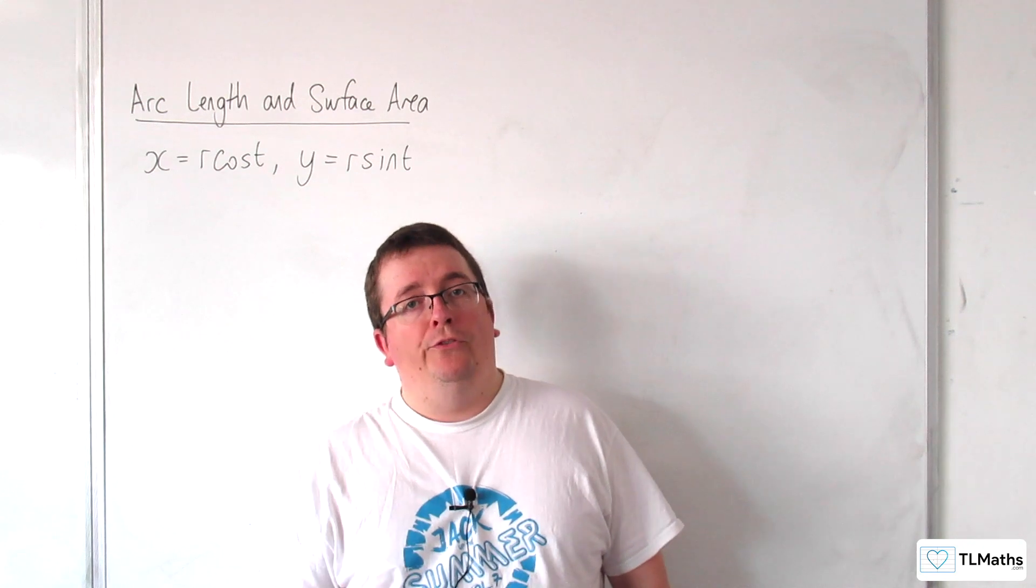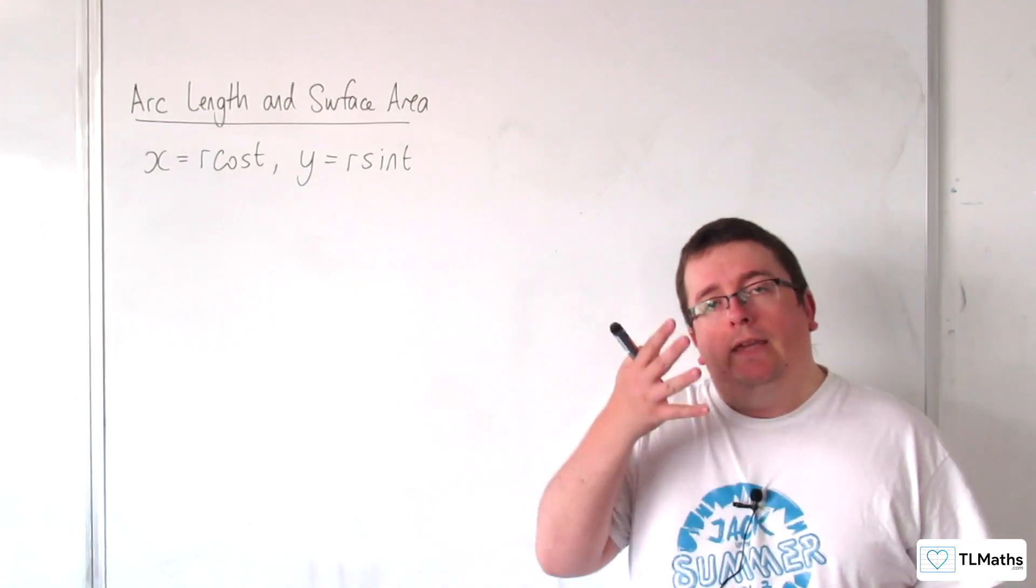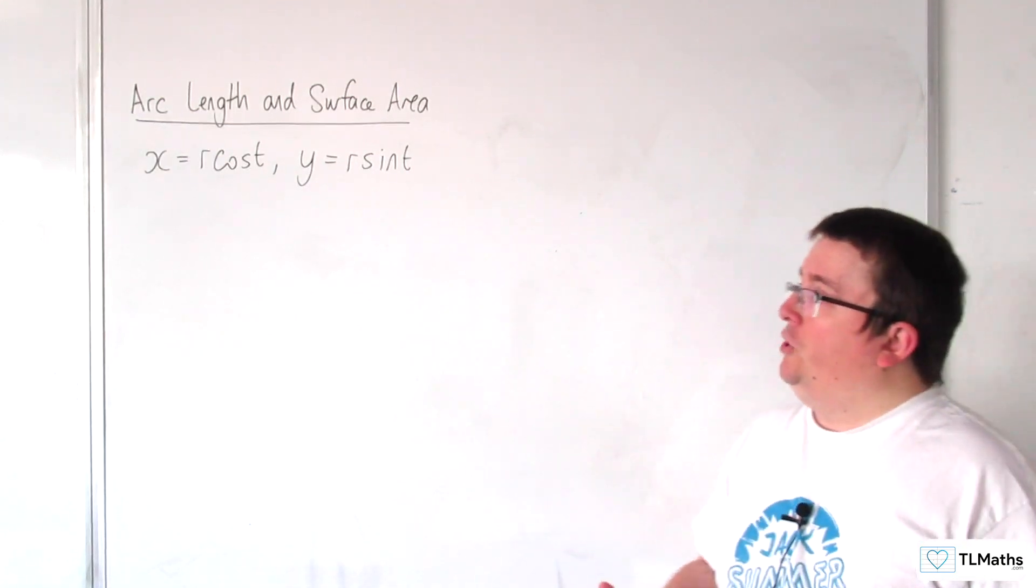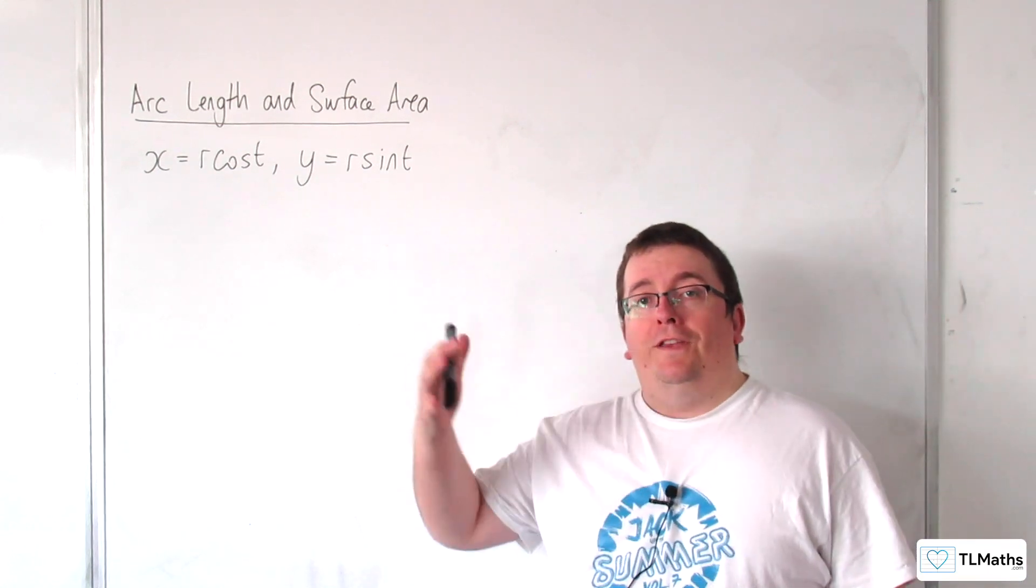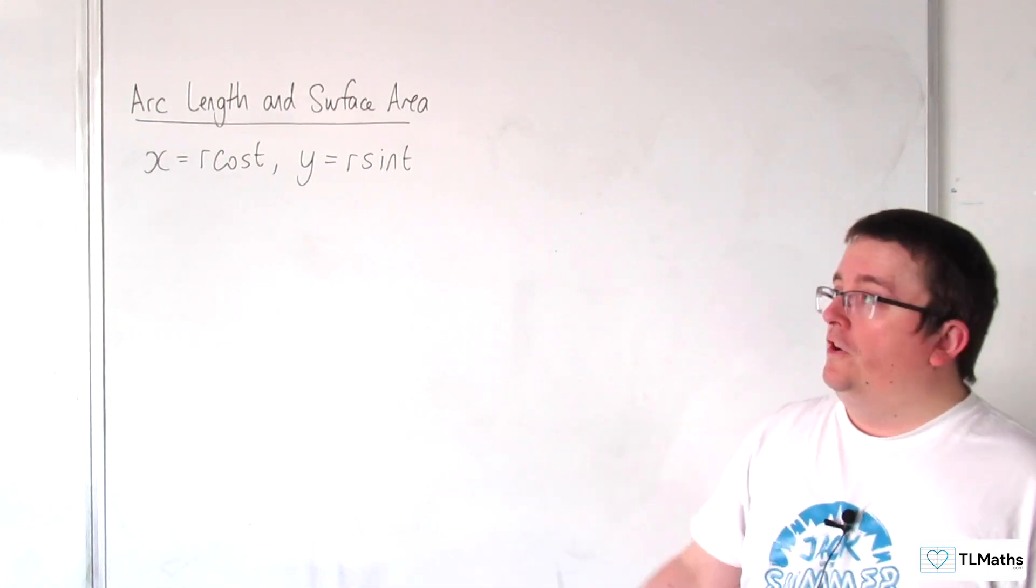So now that we know how to find the length of an arc, given a pair of parametric equations, I thought it might be nice to do it with the circumference of a circle to confirm that result.